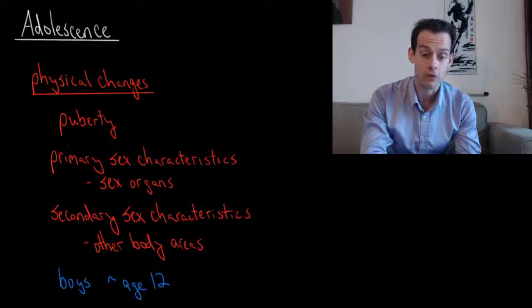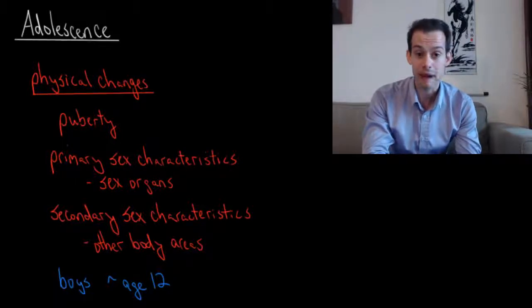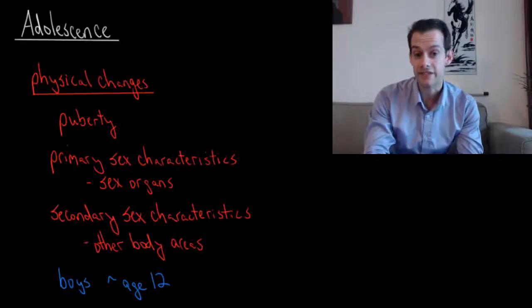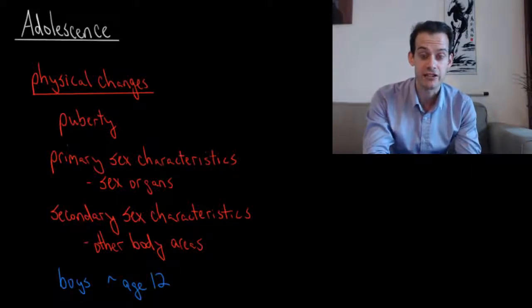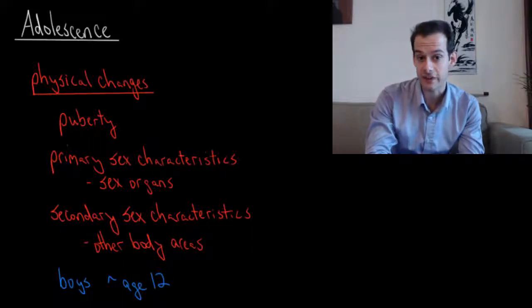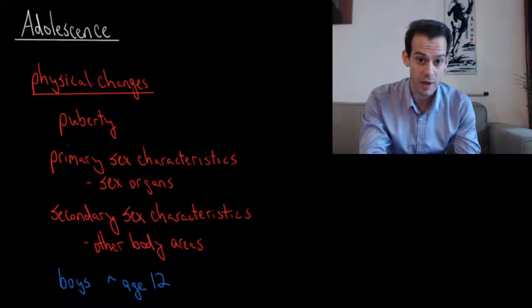Many of these changes are physical changes associated with the onset of puberty. These can be broadly divided into development of primary sex characteristics and secondary sex characteristics. Primary sex characteristics refer specifically to changes in the sex organs themselves, while secondary sex characteristics refer to developments that affect other areas of the body.